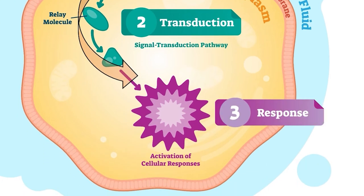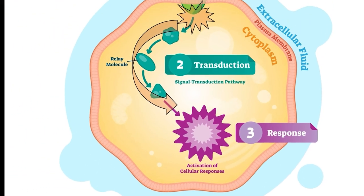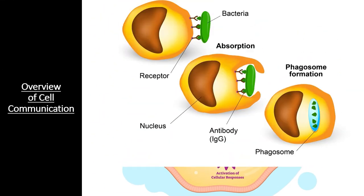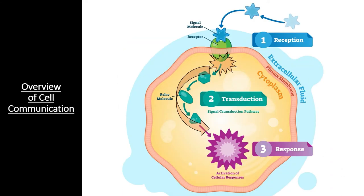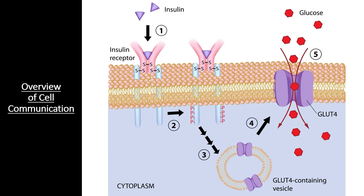Responses can vary greatly depending on the cell signal received. For instance, an immune cell may initiate phagocytosis when receptors on the cell surface notify it that it is in contact with an invasive bacterial cell. Or the insulin receptors on a muscle cell could trigger a cascade of reactions upon receiving insulin, causing the cell to send glucose importers to the cell membrane and import as much glucose as possible.